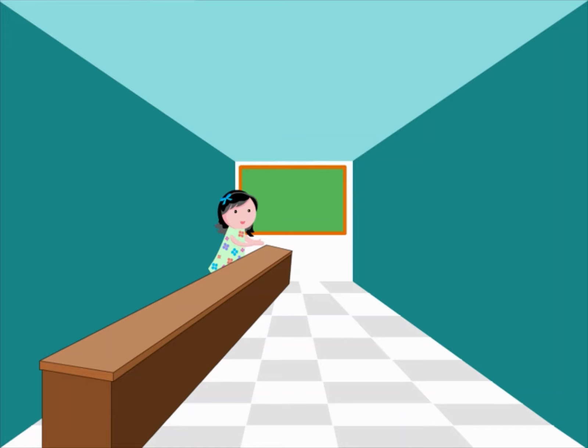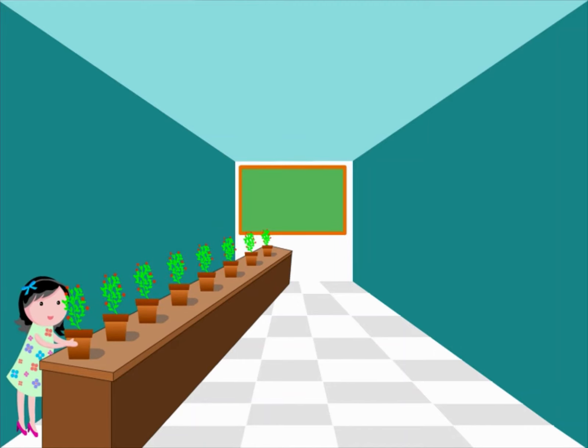Rata has eight flower pots. She wants to arrange them in the following ways. She arranges one flower pot in each row. So eight times one is equal to eight.